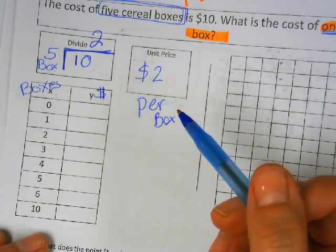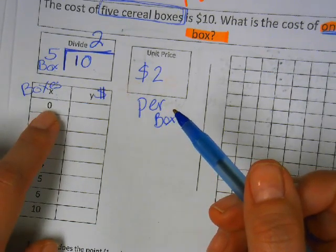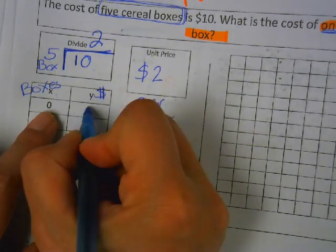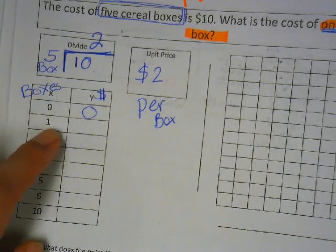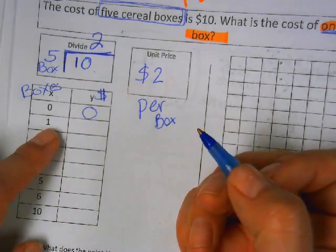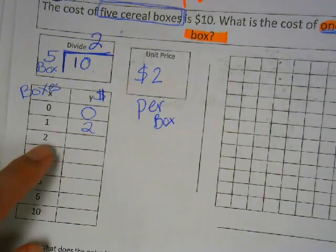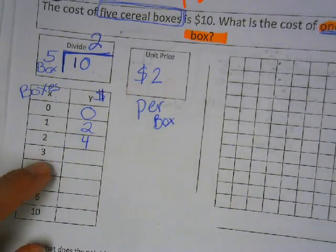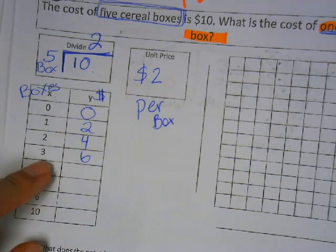All right. I'm going to ask you the hardest question of the day. How much would zero boxes cost? Zero dollars. I know. How much does one box cost? Two dollars. How much does two boxes cost? Four dollars. How much does three boxes cost? Six. What do I keep adding by? Two. Go ahead.